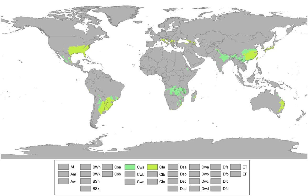A humid subtropical climate is a zone of climate characterized by hot and humid summers and mild winters. These climates normally lie on the southeast side of all continents, generally between latitudes 25 degrees and 35 degrees, and are located poleward from adjacent tropical climates.